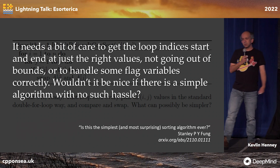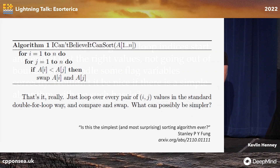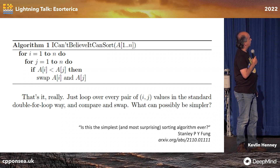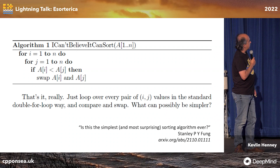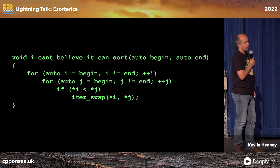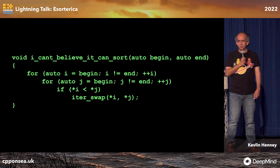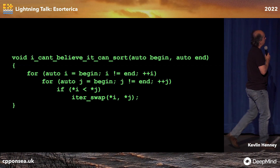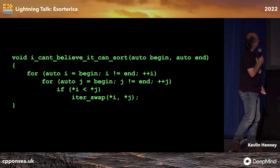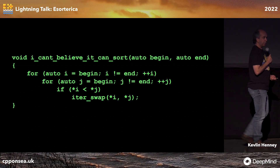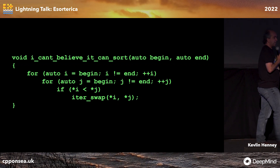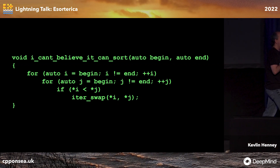It's called "I Can't Believe It Can Sort." And that's it. A lot of people look at that and go, well, hang on, that can't be right — surely you've got the comparison the wrong way. So I moved it into C++ and there it is. This is brilliant because it is incredibly simple and easy to get right every single time.